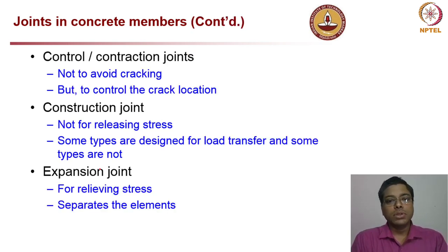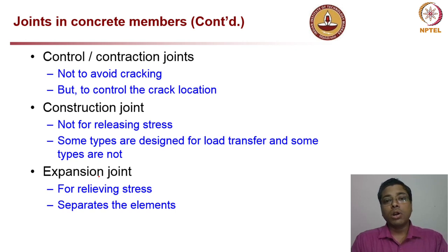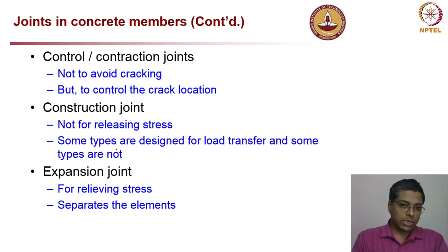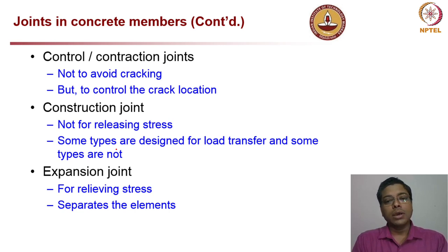Control or contraction joints are not meant to avoid cracking but to control the crack location — wherever we provide those joints, we force the crack to happen right below that joint. Construction joints are designed for load transfer; some allow load transfer across the joint and some do not. The main purpose of expansion joints is to relieve stress by separating the elements on either side, and sometimes also to prevent stress generation, especially thermal-induced stresses.